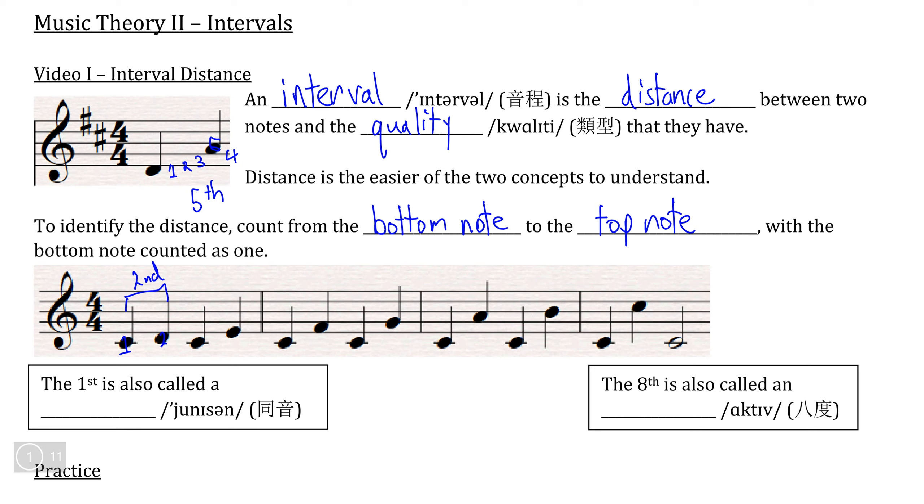C to E here, if we measure this distance: C is one, D would be two, and E would be three. So the distance between C and E is a third.